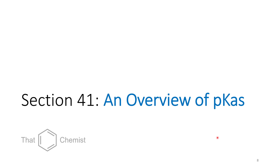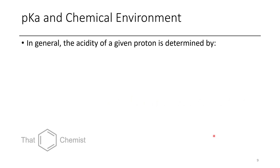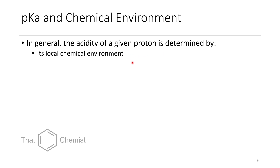So with that, let's get into today's material: an overview of pKa's. When we have a pKa for a given proton, this is essentially how easy it is for it to be deprotonated, or how much it wants to be deprotonated. pKa's are only useful relative to other bases or acids — you can only tell if a base is going to be able to deprotonate a proton if you know the pKa of its conjugate acid.